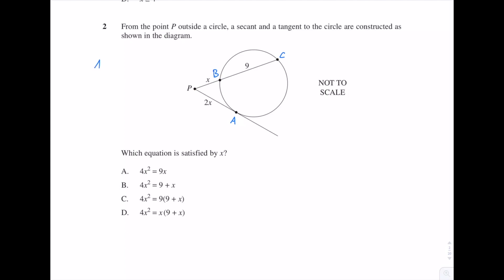So that theorem tells us that AP squared equals BP times CP. So that means we have (2x)² equals x times (9 + x). So that means 4x² equals x(9 + x) and that is our equation. So that means D is our correct answer.